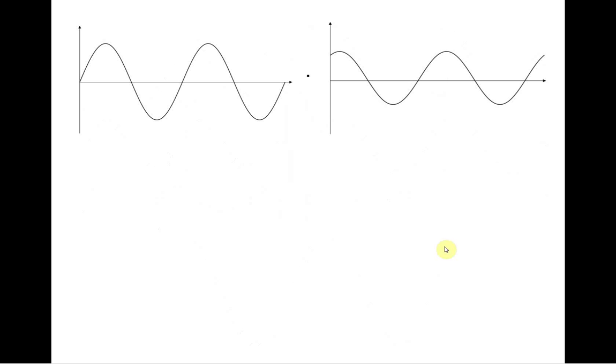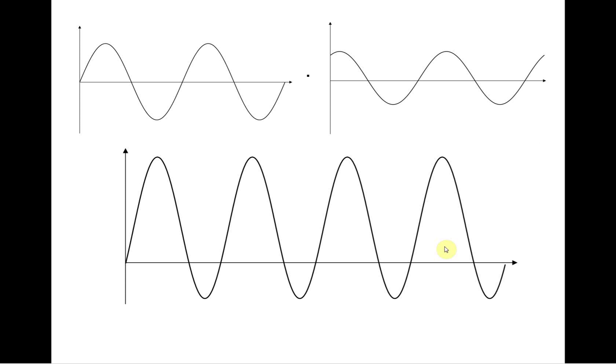But things are different when we multiply two trigonometric signals. Multiplying is a non-linear operation and the product of two trigonometric signals that are on the same frequency will produce a signal on a frequency that is twice the frequency of the input signals.